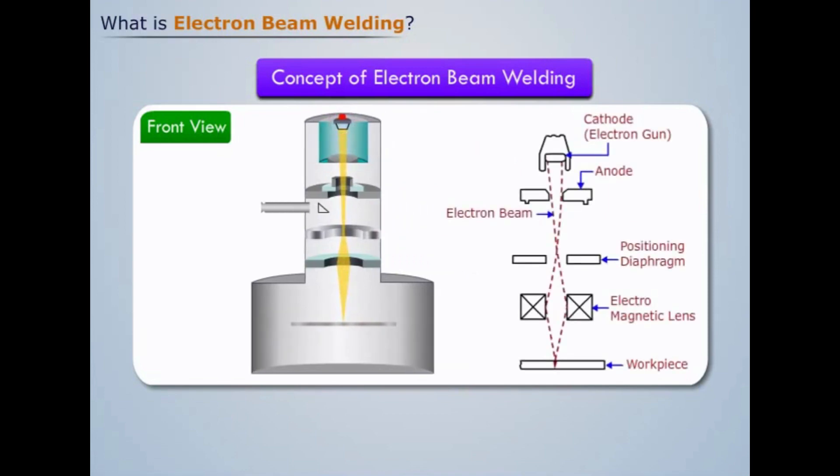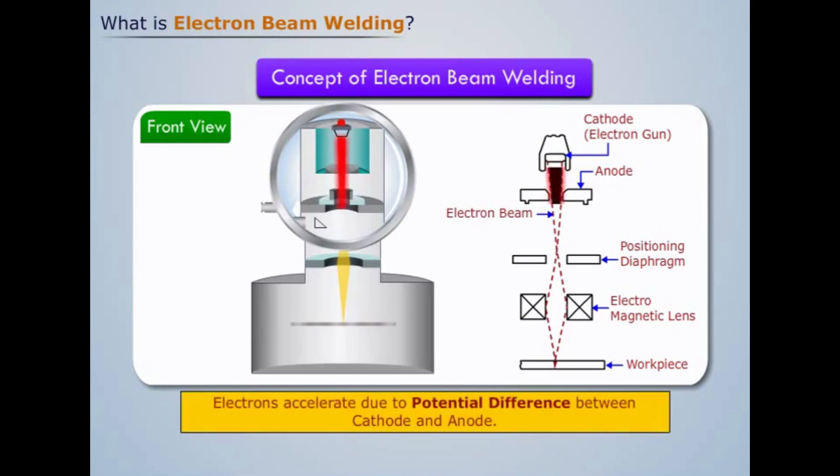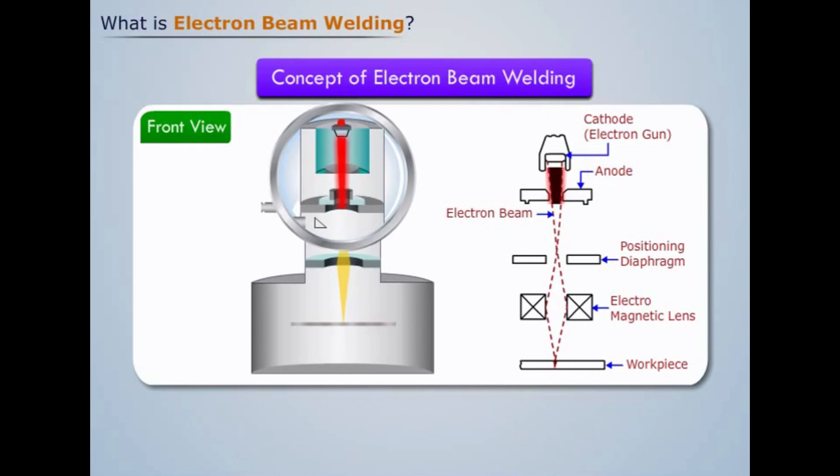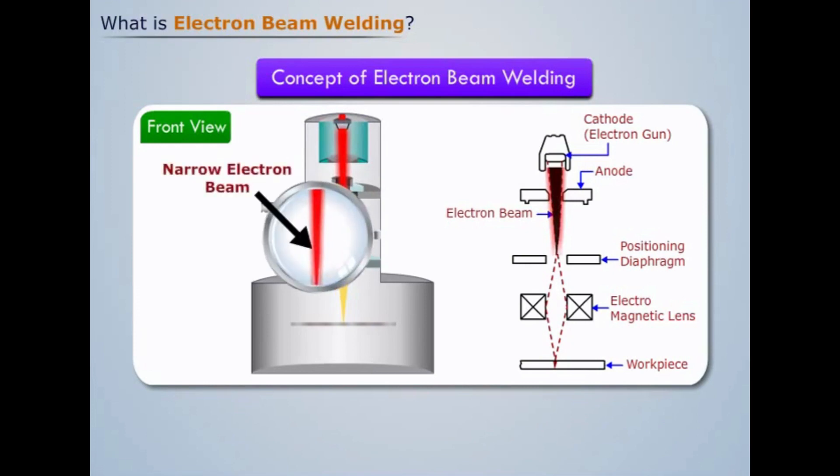At the top of the chamber, we see that the electrons from the electron gun are accelerated when they pass through the anode. The acceleration of electrons is due to the potential difference between the cathode and anode. We see that the electron beam after crossing the anode becomes narrow as it passes through the positioning diaphragm.